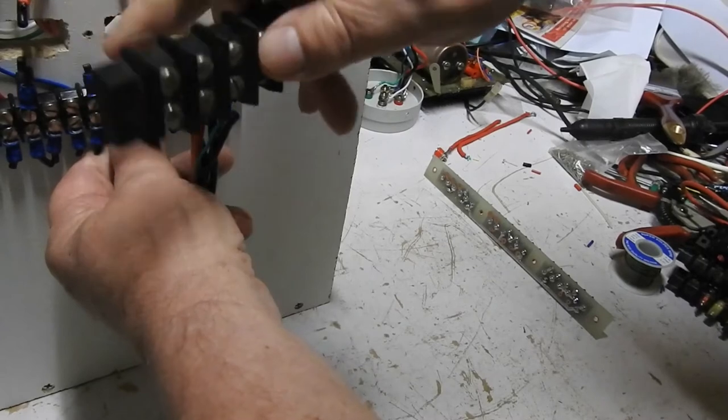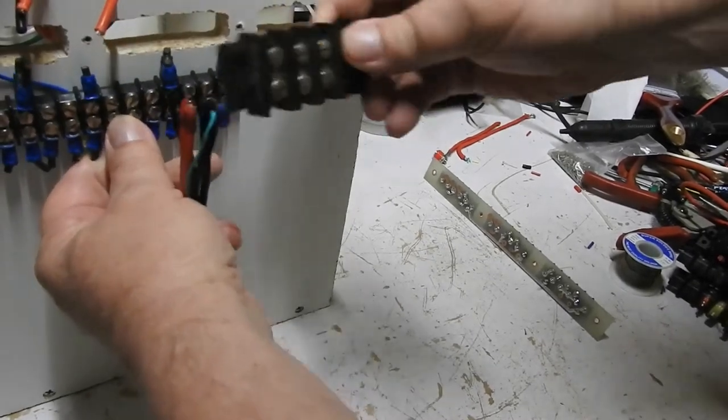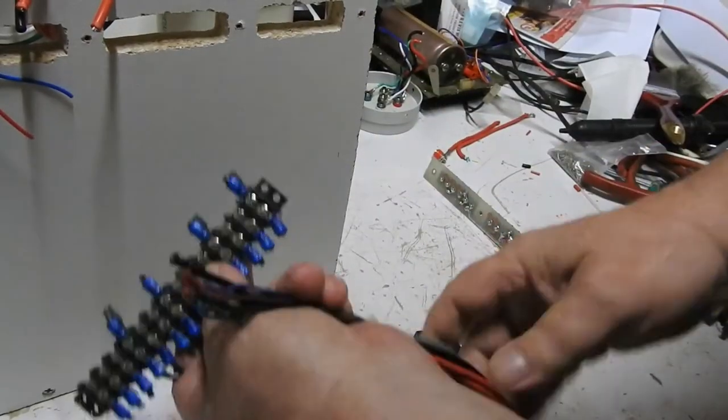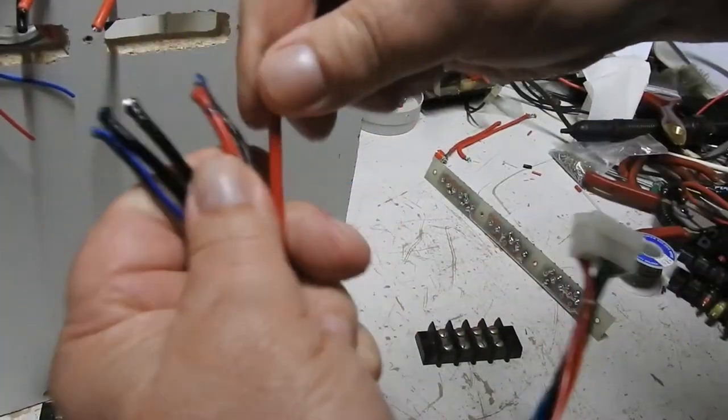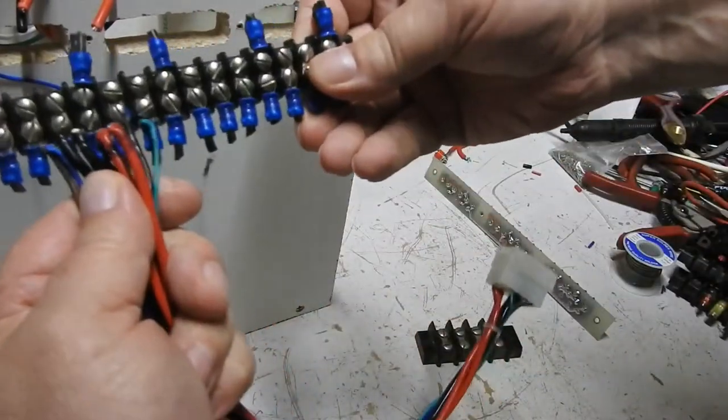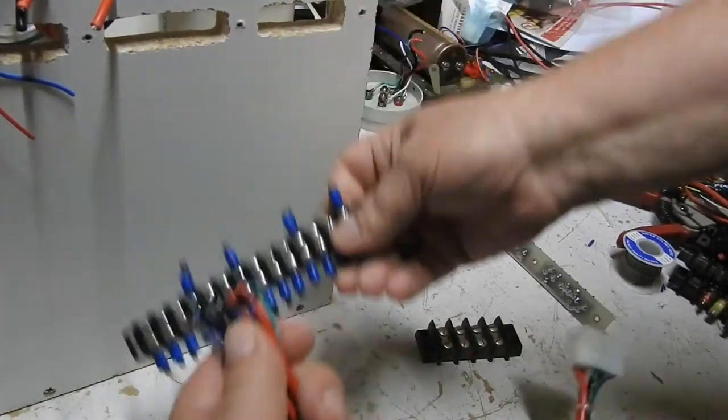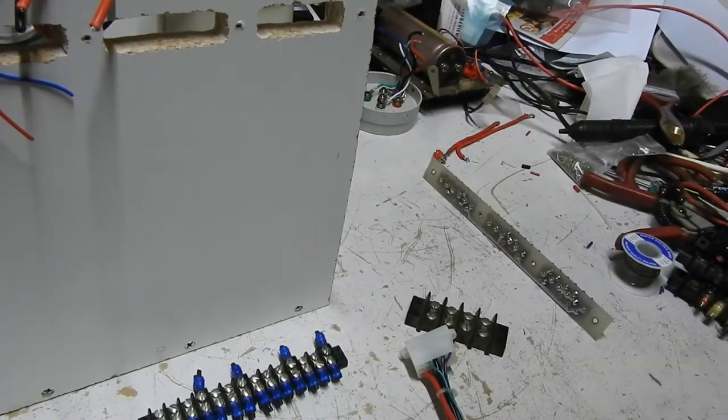put connectors on the end of these wires and join them onto the barrier strips. And then likewise connectors on the end of this to go onto this side of the terminal strip. And then it'll be done I think.